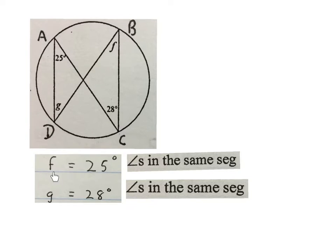Just again, F equals to 25 degrees. That 25 is equal to that F, angles in the same segment. And G is equal to 28, also angles in the same segment.